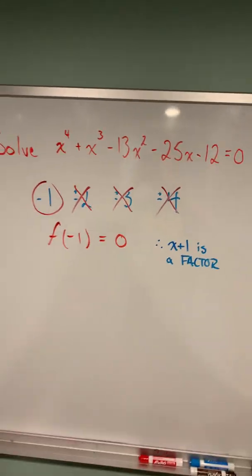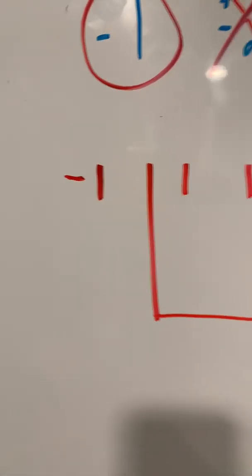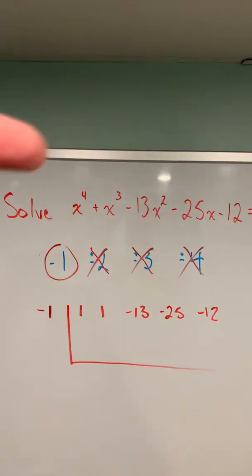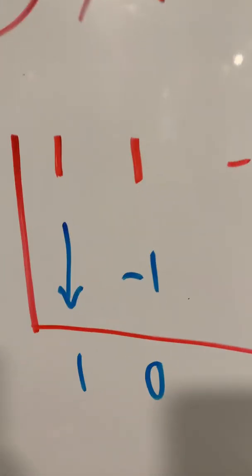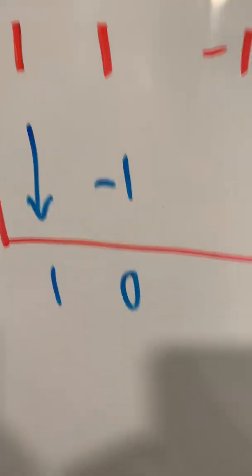And so we say that x plus 1 is a factor of that polynomial. We place the negative 1 outside of a synthetic division table, with the coefficients from the original polynomial in the top row. We then bring 1 down, multiply by negative 1, and place the result here.